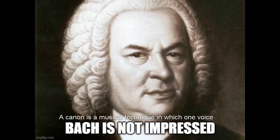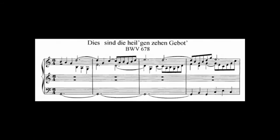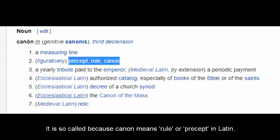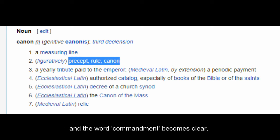A canon is a musical technique in which one voice strictly follows another after an elapse of time. Think of 'Frère Jacques' or 'Row, Row, Row Your Boat.' It is so called because 'canon' means 'rule' or 'precept' in Latin. When one knows this, the relationship between the compositional technique and the word 'commandment' becomes clear.